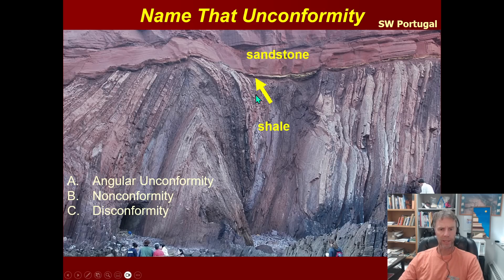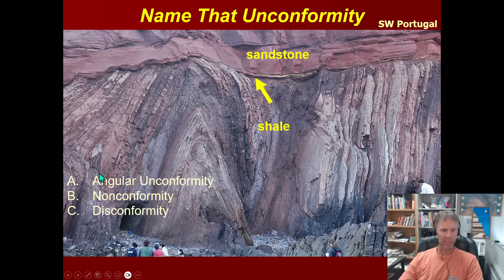Here's another unconformity. Below the unconformity we have shale — a sedimentary rock — but this shale is not only at high angles in terms of its layering, it's pretty intensely folded. It sits underneath sandstone above the unconformity, which is nearly horizontal or at least gently dipping. Because we have this angular relationship between the rocks below and above, and both are sedimentary, that makes this an angular unconformity.